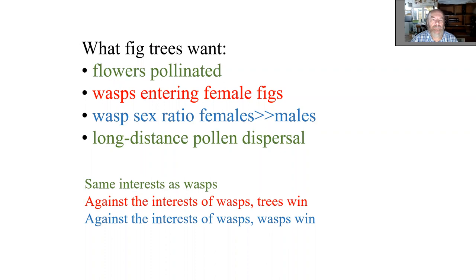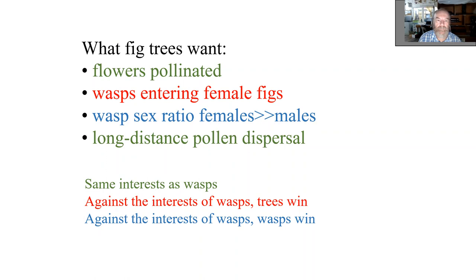Speaking about the different interests in this mutualism: what do fig trees want? They want their flowers to be pollinated, they want wasps to also enter female figs without being able to tell the difference, and they want a wasp sex ratio with many more females than males — because only females spread their pollen — and long-distance pollen dispersal. Pollination and long-distance pollen dispersal are joint interests with no conflict. Wasps entering female figs is of course bad for the wasps, but it looks like figs tend to win. Sex ratio, however, is really controlled by the fig wasps.